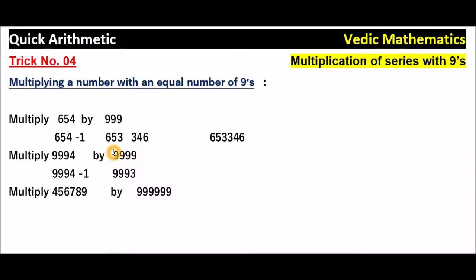9 minus 9 is 0, 9 minus 9 is 0, 9 minus 9 is 0, 9 minus 9 is 0, 9 minus 3 is 6. So 0006. The answer is 9994 into 9999 is equal to 9993 0006.